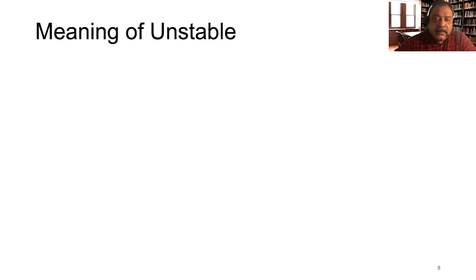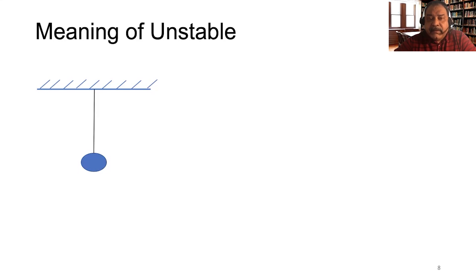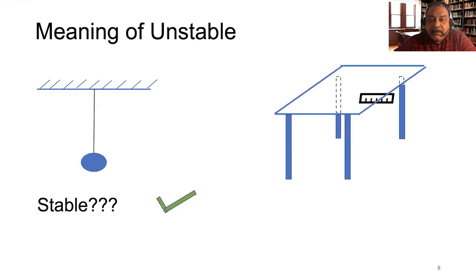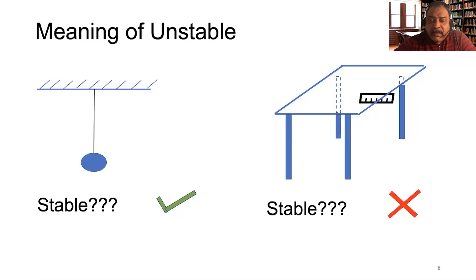What does unstable mean? Let me give you two common examples. Here's an object hanging from a ceiling — assuming the string is very strong, would you consider this stable? It looks like it's not going to go anywhere, so it looks pretty stable. But here's a table with a ruler sticking off the edge. Would you consider that to be stable? It looks a little precarious. If you push the ruler a little bit, it's going to fall over — so it's not very stable.